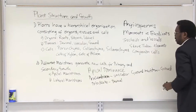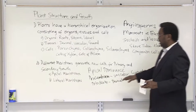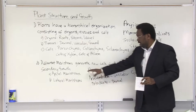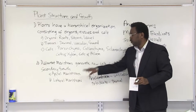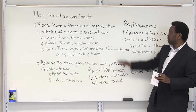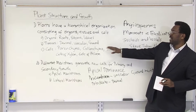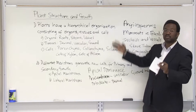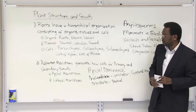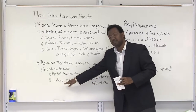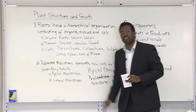So this is primary growth, and the three primary or apical meristems responsible for each tissue type, which then develops into the organs we've spoken about already.